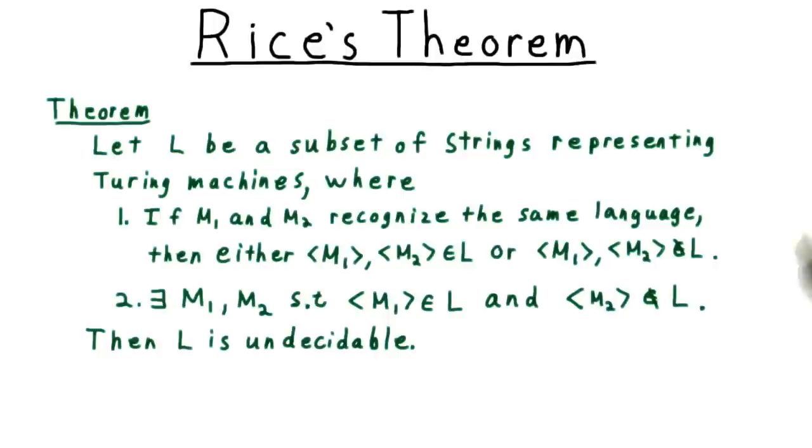This just says that the language only depends on the behavior of the machine, and not on its implementation. Second, the language can't be trivial. There must be a machine whose description is in the language, and a machine whose description is not in the language. If these two properties hold, then the language L is undecidable.